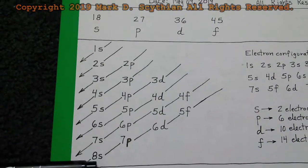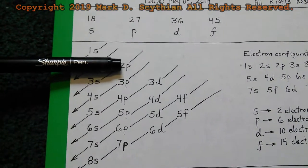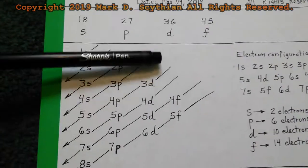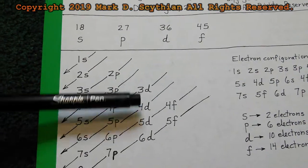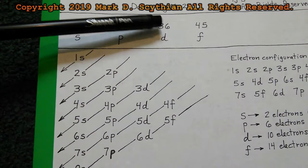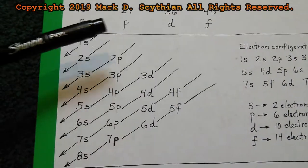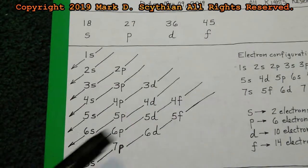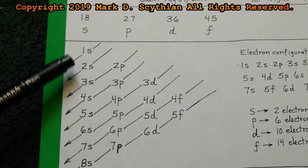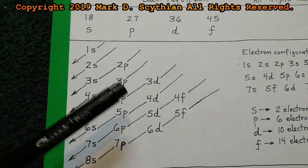Going down a column, write 1 through 8 for S, skip a row to the right, write 2 through 7 for P, skip a row, go down again — 3D to 6, 36 is 3 to 6, and 45 is 4F and 5F. Then draw a southwest directional arrow and start at the top: 1S, 2S, 2P, 3S, 3P, 4S, 3D, 4P, 5S, and so on.